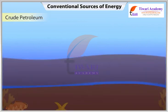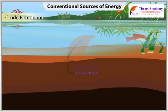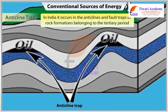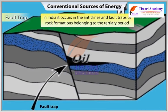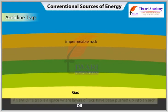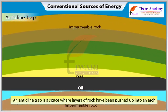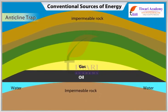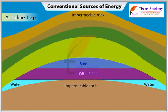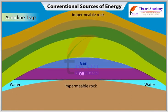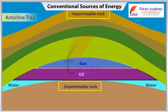Crude petroleum is obtained from sedimentary rocks of marine origin dating back to three million years ago. In India it occurs in anticlines and fault traps of rock formations belonging to the tertiary period. An anticline trap is a space where layers of rock have been pushed up into an arc. Oil and gas, being lighter, migrate into the folded porous and permeable layer and rise to the top, trapped by an overlying bed of impermeable rock.